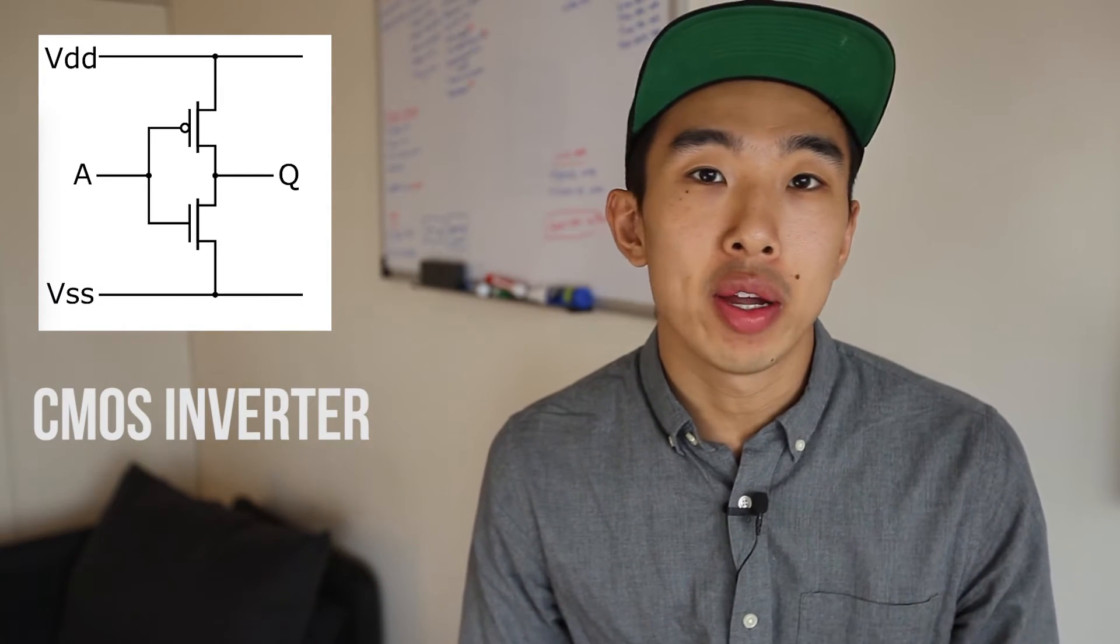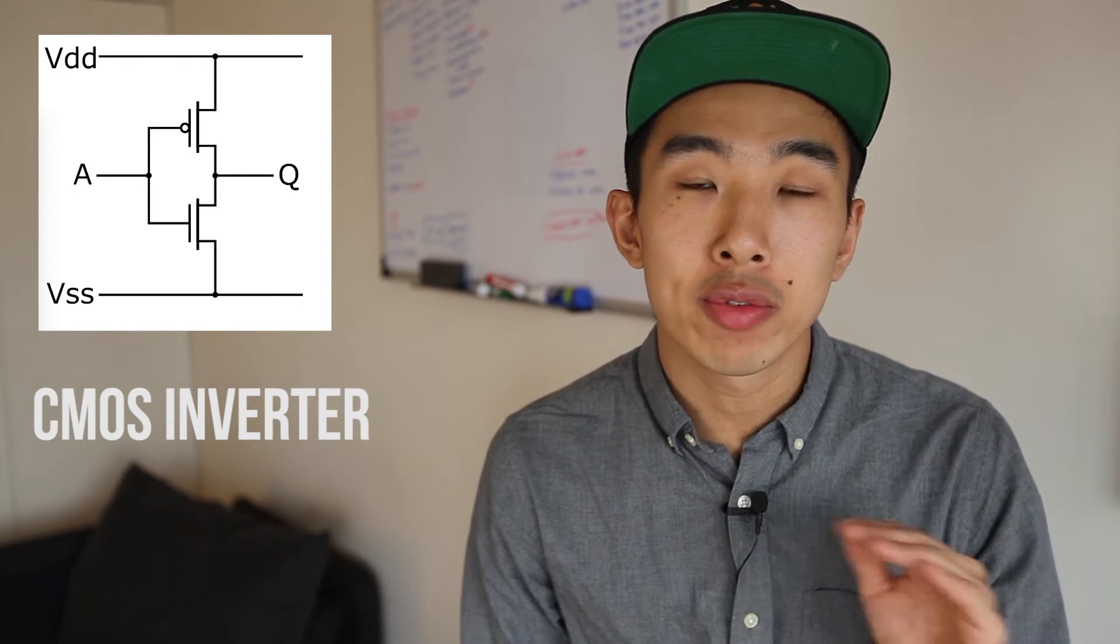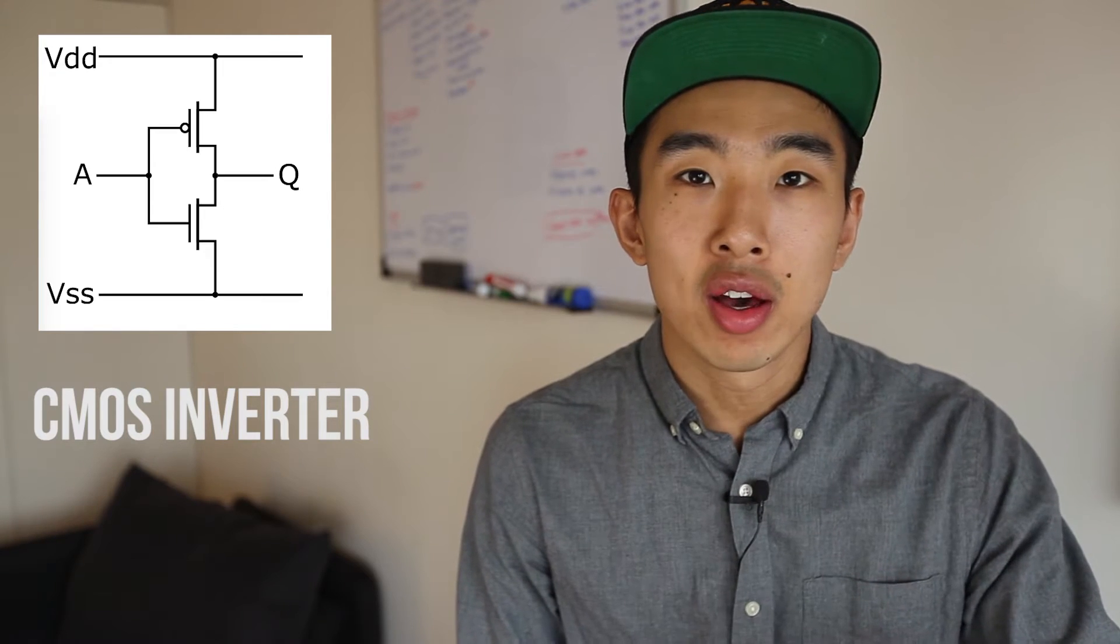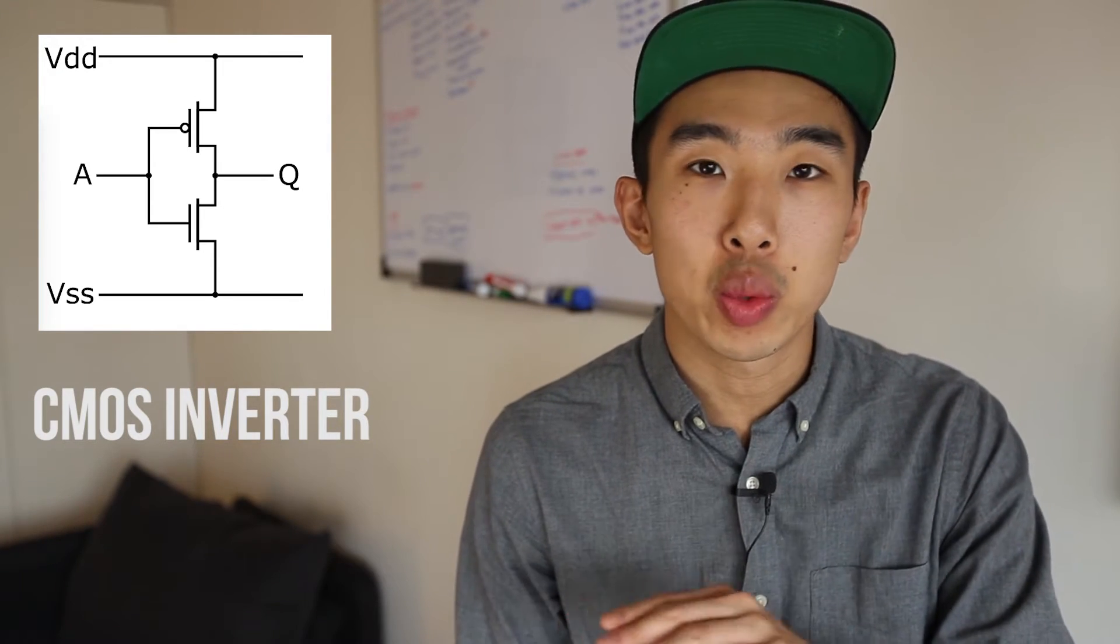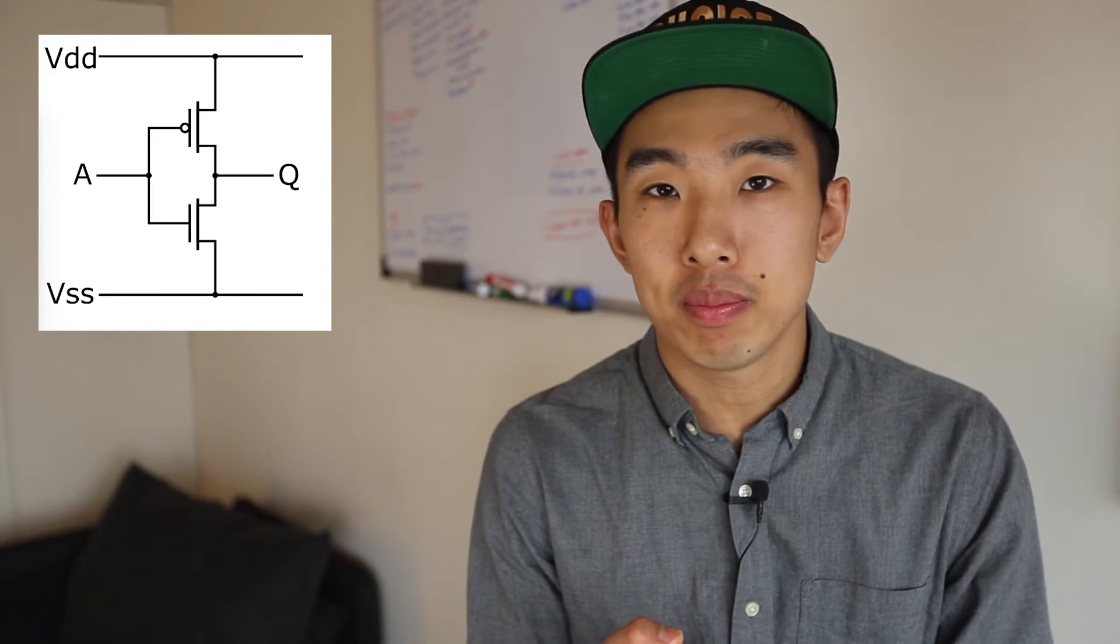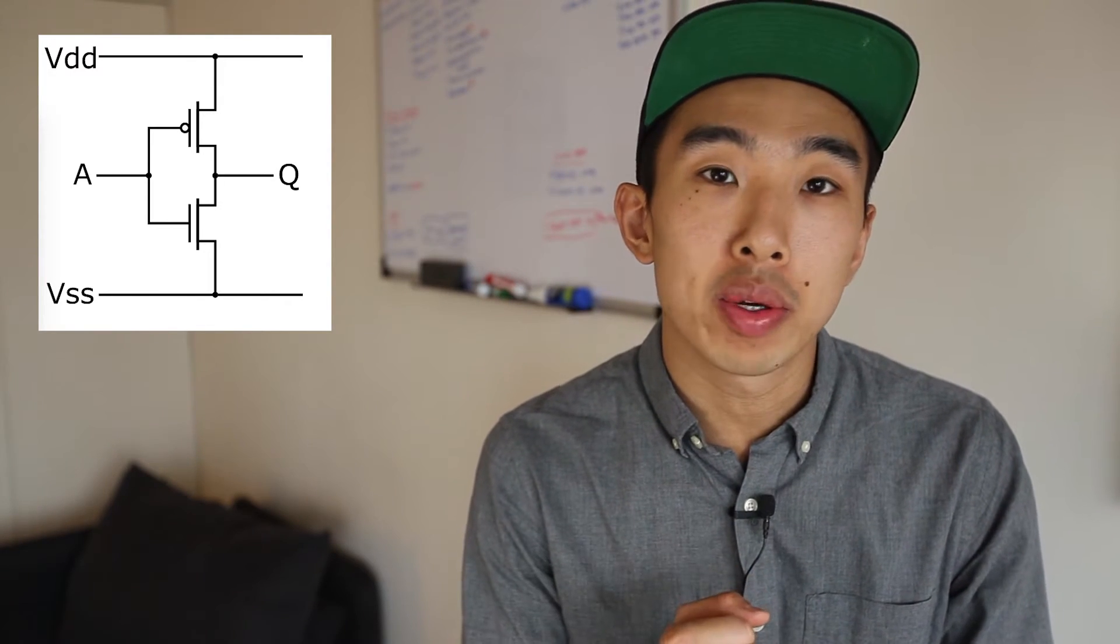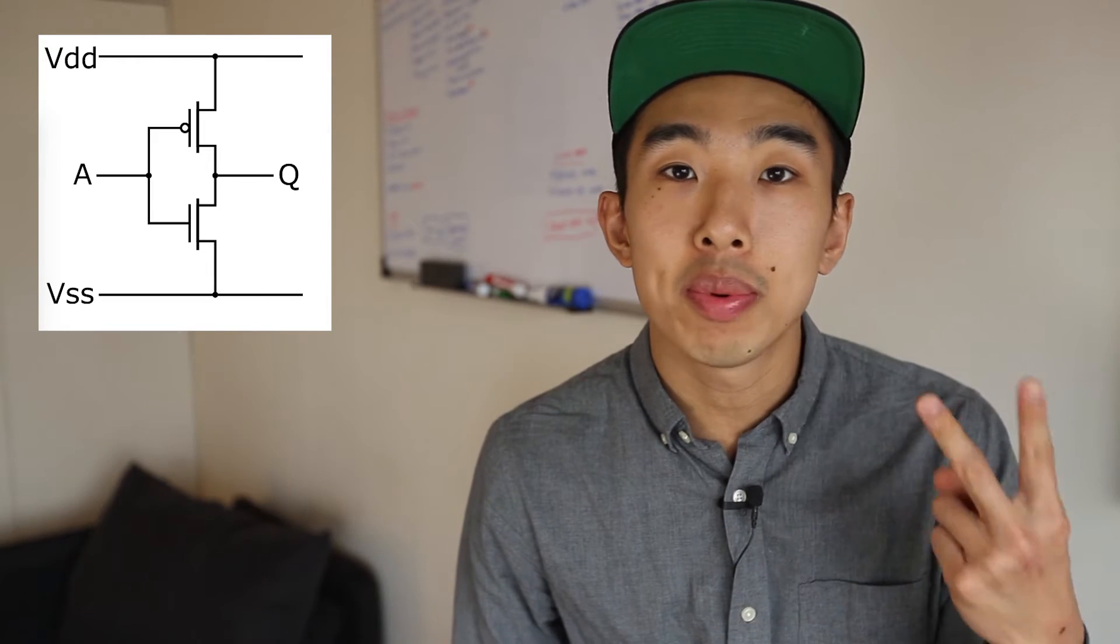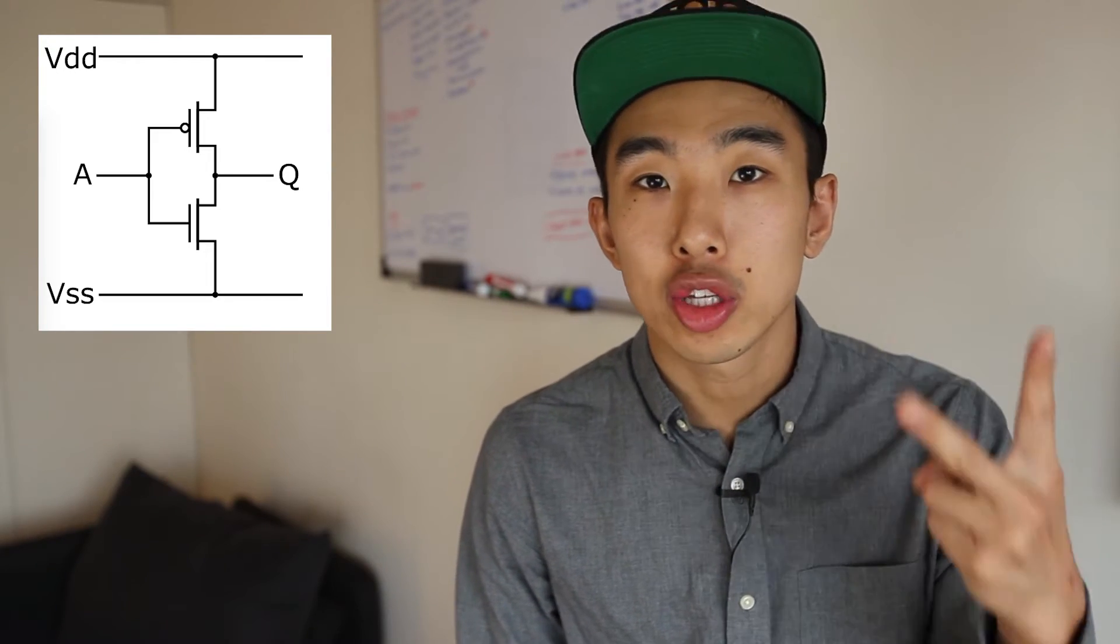So we have this diagram here, and this is the CMOS diagram of an inverter. Let's just explain all these weird symbols and all these weird letters first before we move on. A is the input, easy enough, and Q is the output. All right, this is an inverter. There's one input, one output. A input, Q output.